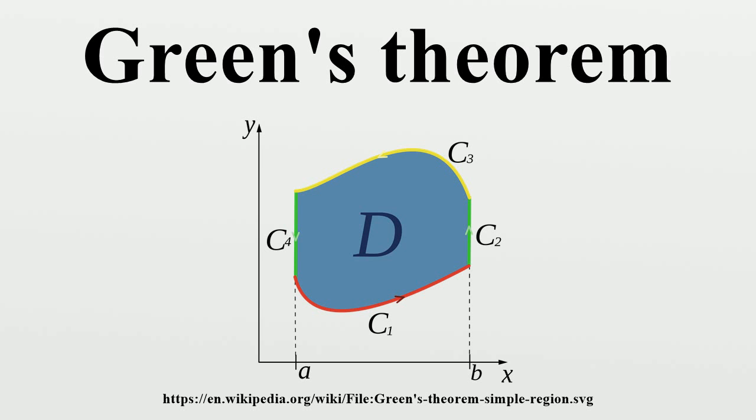In physics, Green's theorem is mostly used to solve two-dimensional flow integrals, stating that the sum of fluid outflows from a volume is equal to the total outflow summed about an enclosing area. In plane geometry, and in particular area surveying, Green's theorem can be used to determine the area and centroid of plane figures solely by integrating over the perimeter.